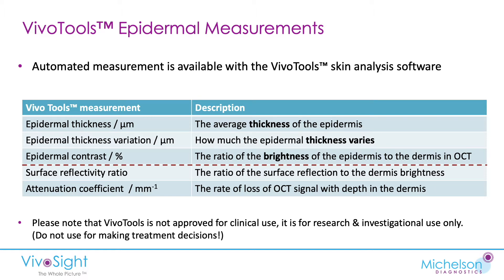VivaTools measures three things of the epidermis. First, epidermal thickness in microns — the average thickness of the epidermis across the whole 6 mm by 6 mm field of view. Next, epidermal thickness variation: how much the thickness varies from point to point across the whole 6 mm area, due to the lumps and bumps, ridges, and so forth. Then there is the epidermal contrast, which is a measure of the ratio of the brightness of the epidermis to the brightness of the dermis in the OCT image, which may relate to the skin tissue.